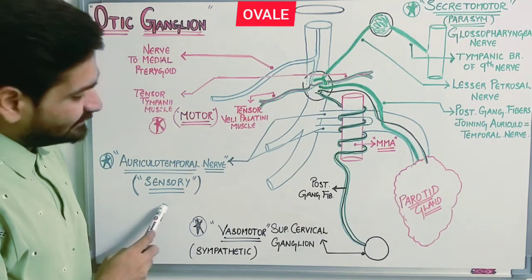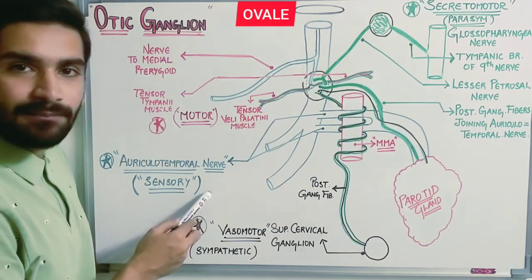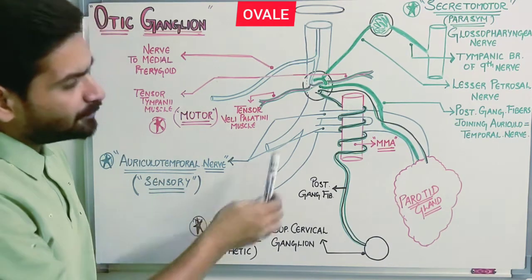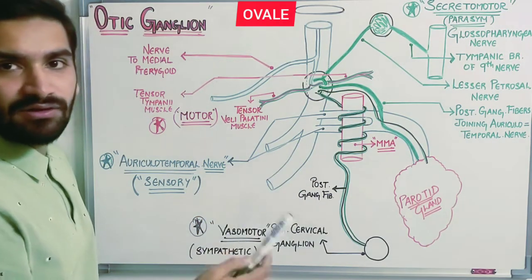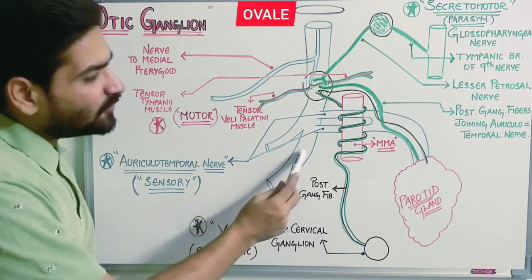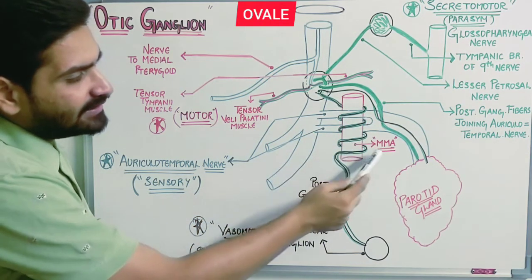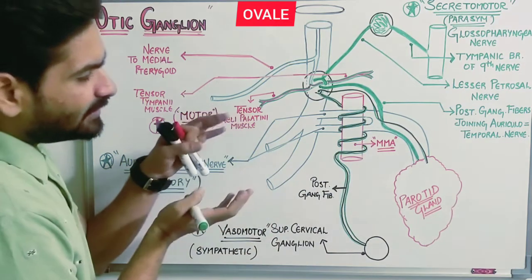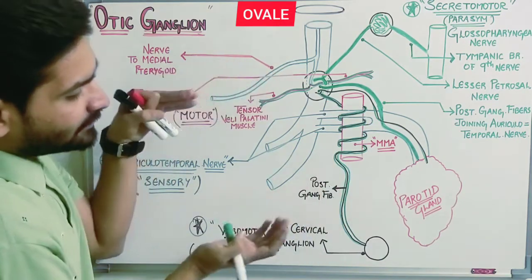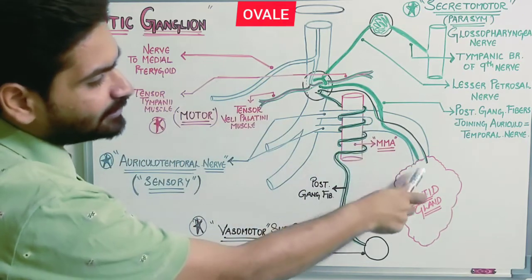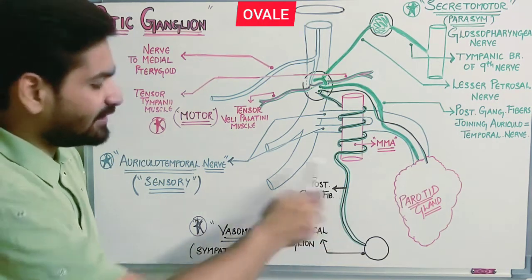Third is the sensory supply to the parotid gland. All sensations from the parotid gland are carried by the auriculotemporal nerve. The auriculotemporal nerve is a branch of the posterior division of the mandibular nerve. It divides into two branches to wind around the middle meningeal artery — one from above and one from behind — then reunites as a single branch providing sensory supply to the parotid gland.